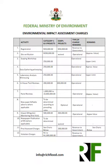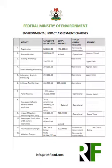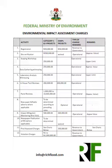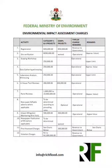This is the document we are going to be working with: Federal Ministry of Environment Environmental Impact Assessment Charges. You can see stage by stage, the activity you are going to undertake, under what category of project — we have category one and category two projects, and we have environmental and social management plans. There are associated fees to be paid, and then the type of charge and remarks on the type of charge.